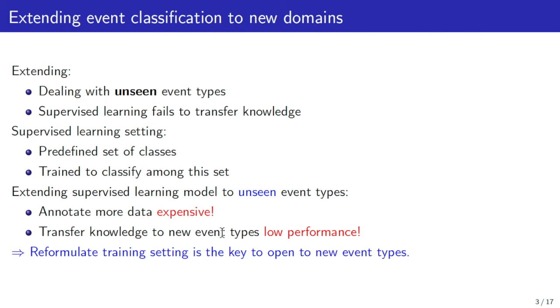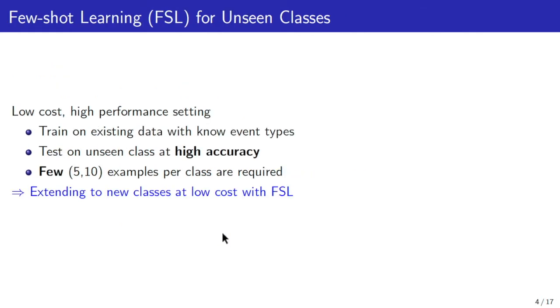Therefore, in this study, we call for a transformation of training scheme to make event classification model perform better on unseen events. Our proposal is to train model under few-shot learning settings. Because using few-shot learning, we can still train model on existing dataset. However, we can obtain very high performance on unseen events because of the high generalization ability of the model under few-shot learning.